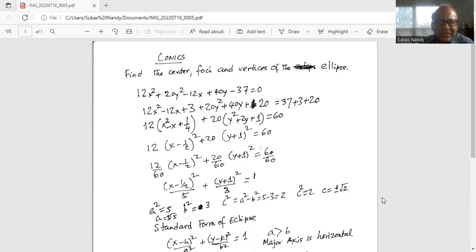Now divide by 60 on both sides, we get 12 divided by 60 times x minus half whole square plus 20 divided by 60, y plus one whole square equal to 60 by 60. Now 12 goes into 65. So we have x minus half square divided by 5 plus y plus one whole square divided by 3 equal to 1.